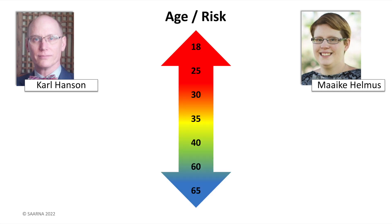In her master's thesis, she combined 29 samples to re-norm Static-99. One of the factors that strongly influenced recidivism rates was age at release. Although age was already an item, the way the item was coded failed to pick up meaningful changes in risk. It's a complicated and fascinating issue because it involves mapping numbers onto relationships that we can't see, but are real nonetheless.